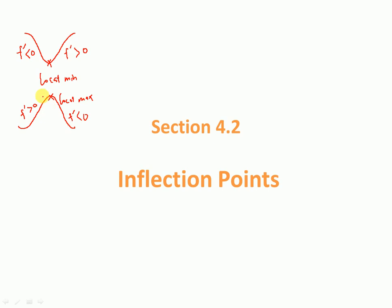That is all about a critical point. We use the first derivative to find the critical point — you find f prime, set it equal to zero, and the values that make f prime equal to zero or undefined give you a critical point. Then you can use the first derivative test to determine whether that is a local minimum or local maximum.